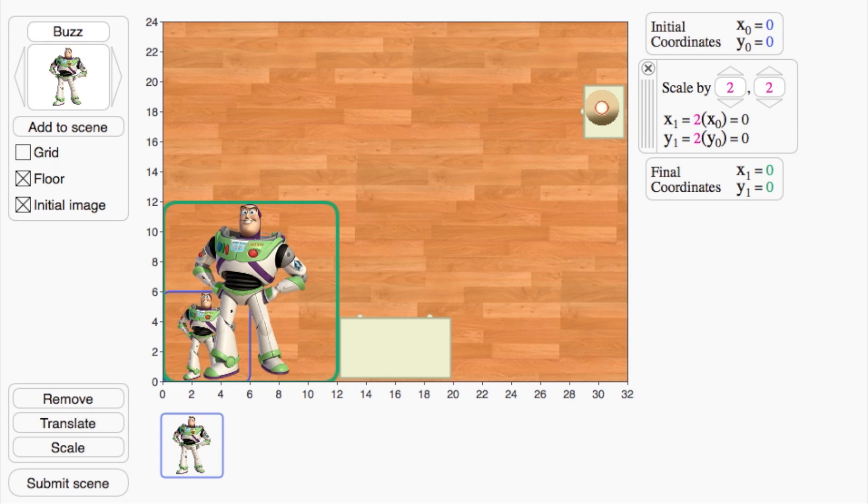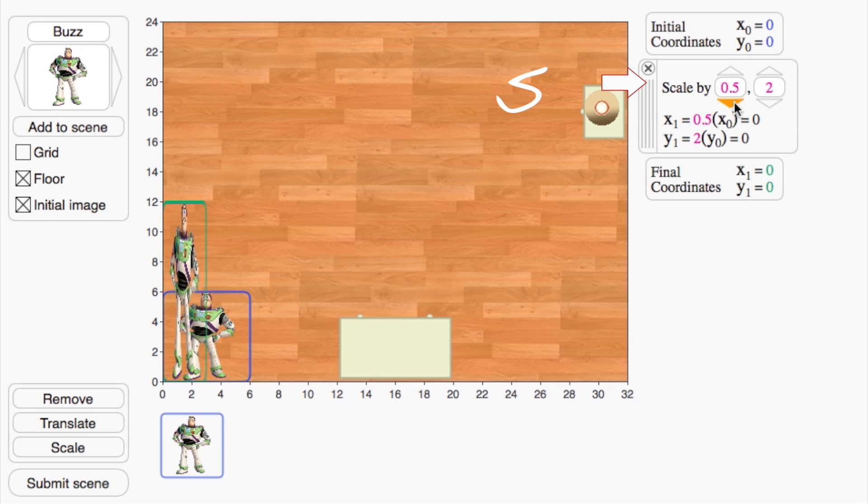More generally, making something s times as big means multiplying by s. If s is larger than one, things get bigger. And if s is less than one, but still positive, things get smaller. We can summarize this by saying that the mathematics of scaling is multiplication.